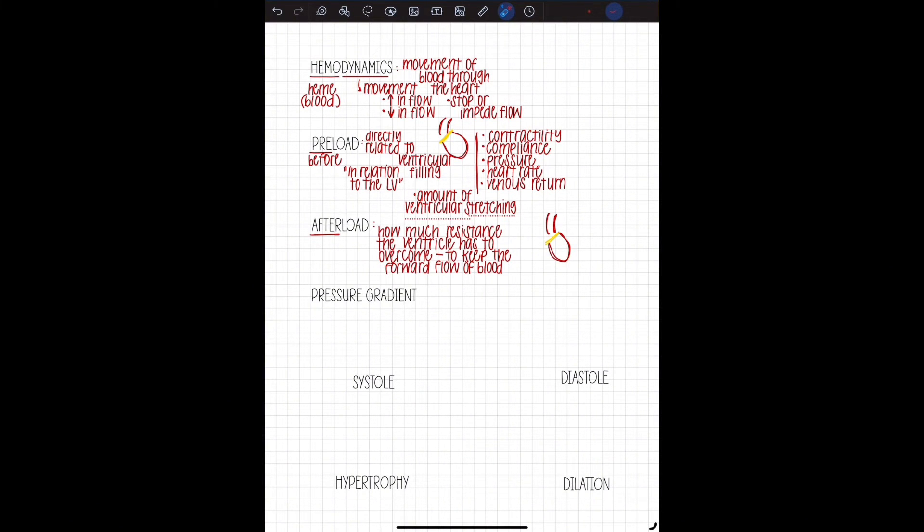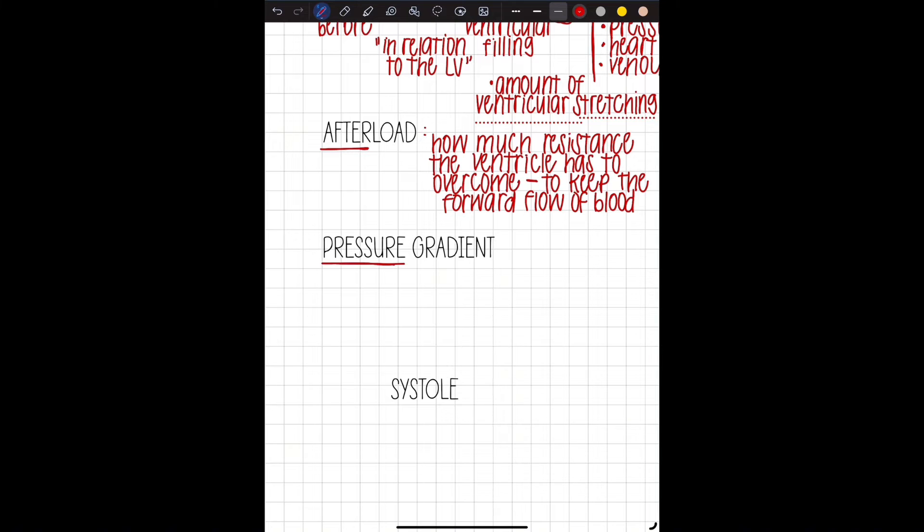The next one we've gone over in my first video, but pressure gradient, which is the difference in pressures, really where they should not be a difference in pressures. And I guess you could say an abnormal difference in pressure. And that's where we've talked about aortic stenosis and that systolic difference in pressures.